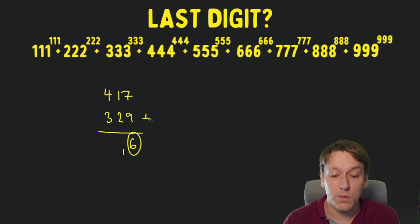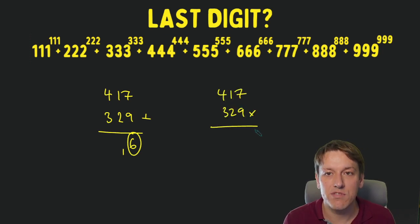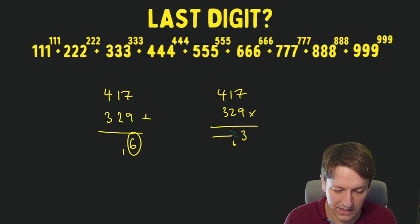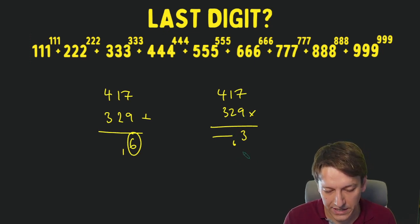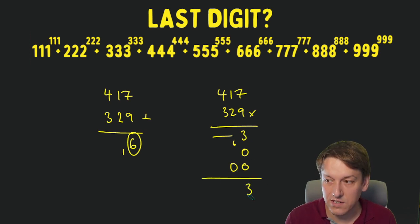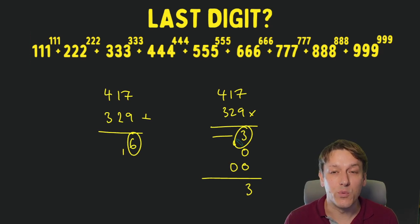But crucially, we can do it when we multiply as well. So if we do 417 times 329, I'd have 7 times 9 is 63, and that's actually all I need to work out the last digit. I would do some other multiplication on this row, but we know on the next row I'd start with a 0, and then the next one with two 0s. So the last digit of the answer here is just 3. There are much more formal ways you can justify these results. I'm just trying to give you the gist of the idea here.